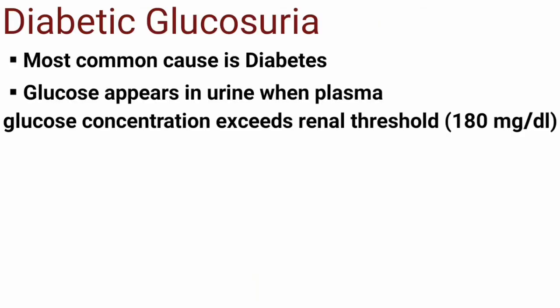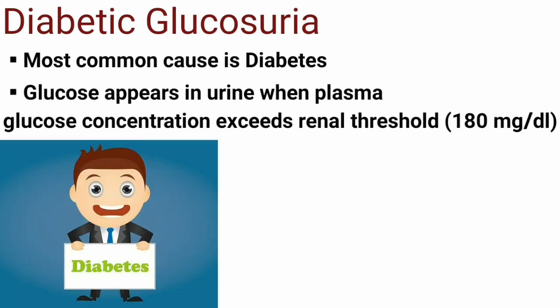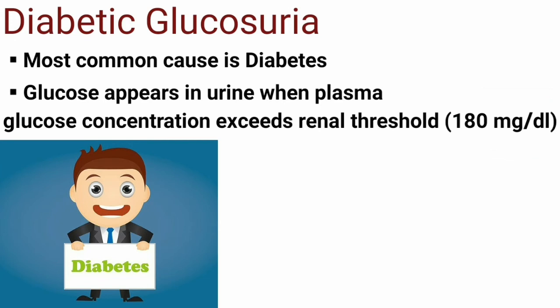Diabetic Glucosuria is the most common cause of glucose excretion in urine. Glucose appears in urine when the plasma concentration of glucose exceeds the renal threshold — that is, whenever the blood glucose level is more than 180 milligrams per deciliter, it is excreted in the urine.